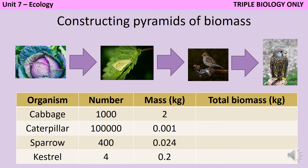You may be asked to draw a pyramid of biomass. The first step is to calculate the total amount of biomass contained within each trophic level. To do this you need to think about both the number of each organism and the mass of each organism; by multiplying these together you can work out the total biomass for that trophic level. For example, if there are 1,000 cabbages with a mass of 2 kg each, that's a total biomass of 2,000 kg. Then for the caterpillars we have 100 kg, for the sparrows 9.6 kg, and for the kestrels 0.8 kg. You're expecting each trophic level to have around 10% of the previous trophic level, so this will give you a clue that your numbers are right.